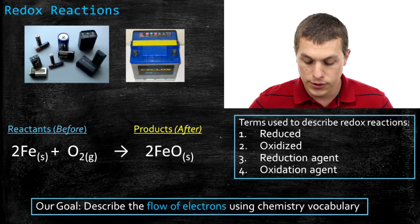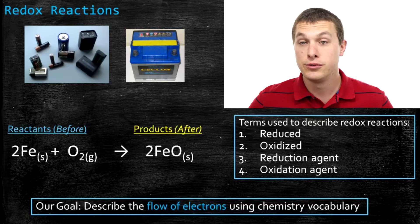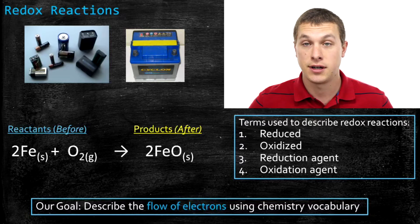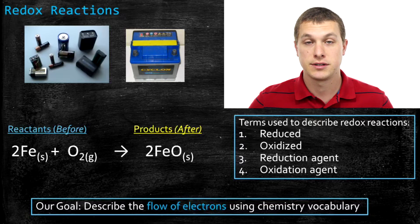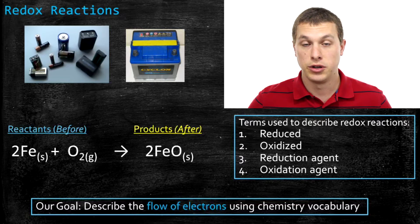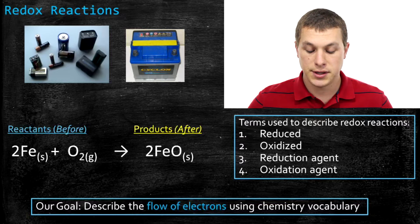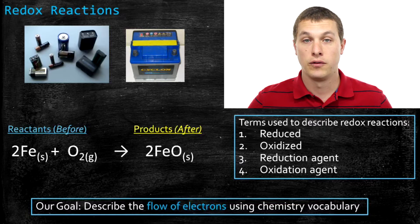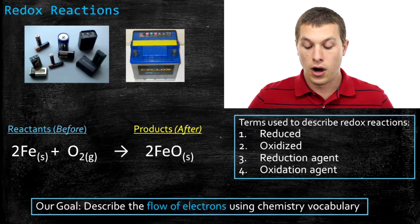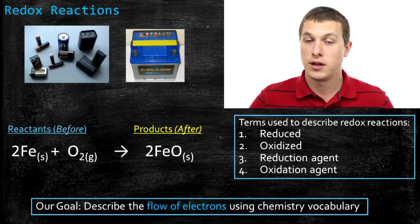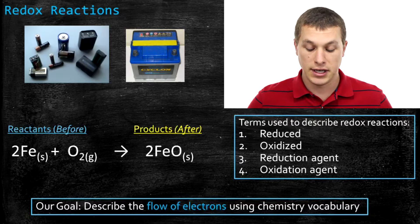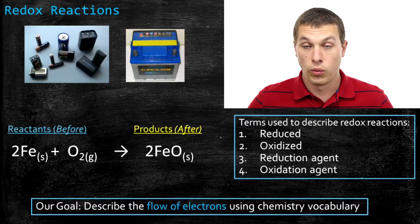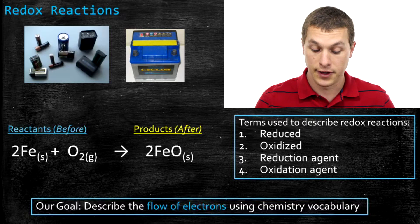Some of the terms we're going to use are: reduced, oxidized, reducing agent, and oxidizing agent. I'm going to introduce these terms slide by slide and give you a chance to become familiar with them. First, let's just think about the flow of electrons — let's forget about all these different words and just talk about where the electrons are actually going. Then we'll build up to thinking about what it means to be reduced or oxidized.